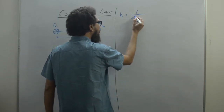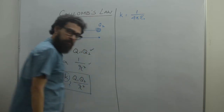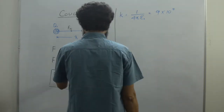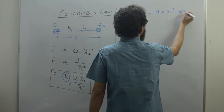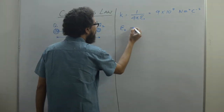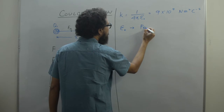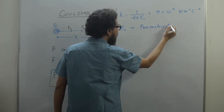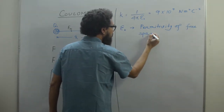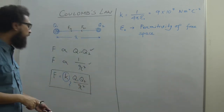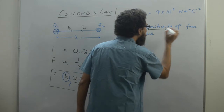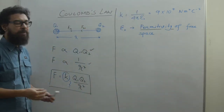k is equal to 1 / (4πε₀), and the value is 9 × 10⁹ N·m²·C⁻². This ε stands for permittivity — permittivity of free space. I am writing this constant k in the medium which is free space or vacuum. Permittivity is a new word — what does it signify? It signifies one simple thing.